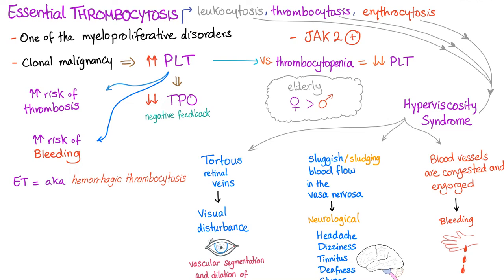Essential thrombocytosis is a clonal malignancy leading to increased production of platelets — different from thrombocytopenia where platelets are low. JAK2 kinase mutations cause all cell lines to be increased, especially thrombocytes. When you have lots of platelets, three things happen: TPO decreases via negative feedback, there is increased risk of thrombosis because platelets are thrombocytes, and there is increased risk of bleeding because these platelets are dysfunctional. That's why we call it hemorrhagic thrombocytosis.